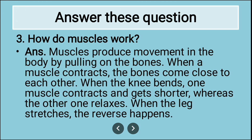Third long answer: How do muscles work? Muscles produce movement in the body by pulling on bones. When a muscle contracts, the bones come close to each other. When the knee bends, one muscle contracts and gets shorter, whereas the other one relaxes. When the leg stretches, the reverse happens — one relaxes and the other contracts.